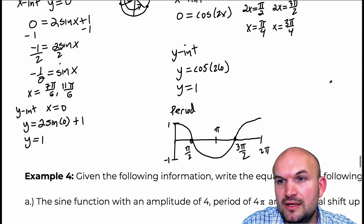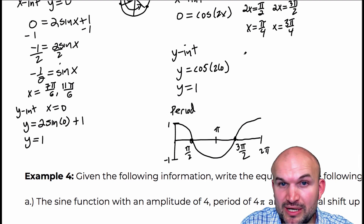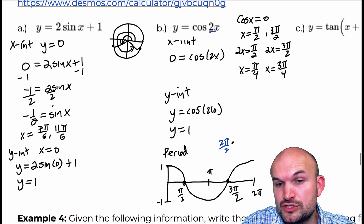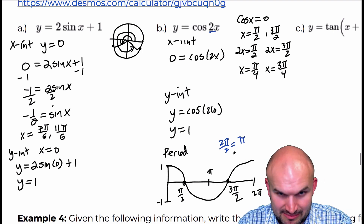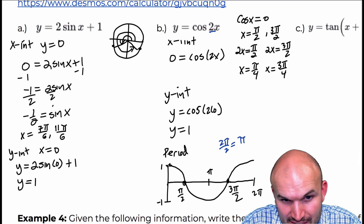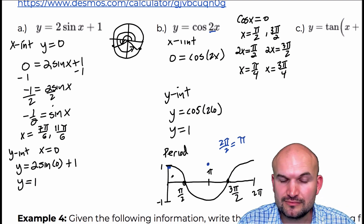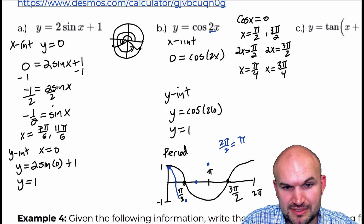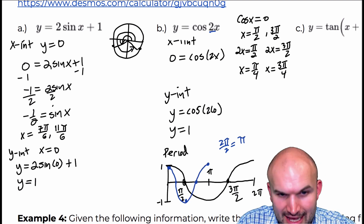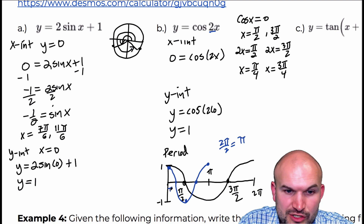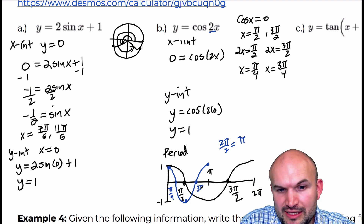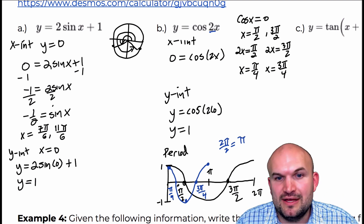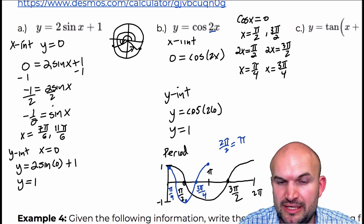If we change the period — our new period is 2π/2, which is now π — I'm taking this graph and condensing it. So the new x-intercepts shift down. By taking π/2 and dividing it by 2, that's where we get π/4, and that's where we get 3π/4. You can see it's basically being scrunched in half on everything, and that's where all those values come from.